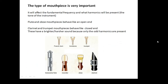Another factor is the type of mouthpiece, which affects the fundamental frequency and also what harmonics you get. Some mouthpieces act like an open end — a flute and oboe mouthpiece apparently behave like an open end. Whereas a clarinet and a trumpet mouthpiece behave like a closed end, and because you only get the odd harmonics, they have a brighter, harsher sound. Imagine the sound made by a trumpet compared to the sound made by a flute, which is a lot sweeter.